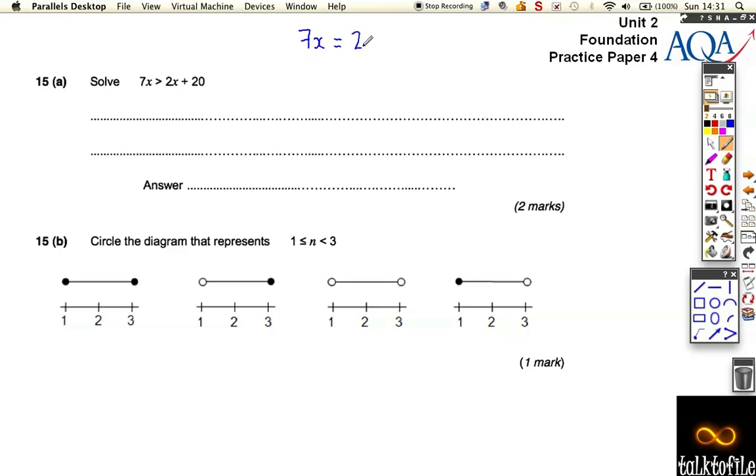7x is equal to 2x plus 20. If you were asked to solve that, that's probably something you could do. Well actually, let's solve this and then that's going to help us solve the inequality.